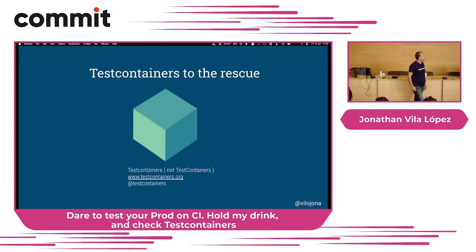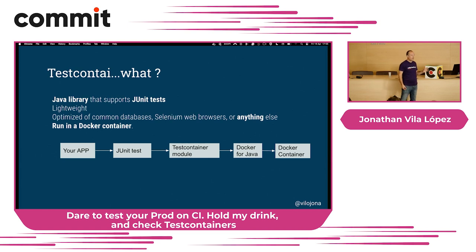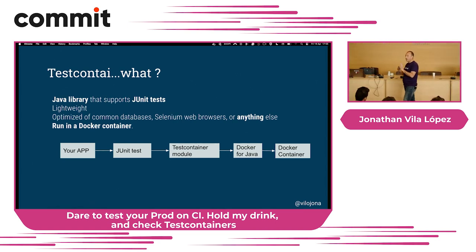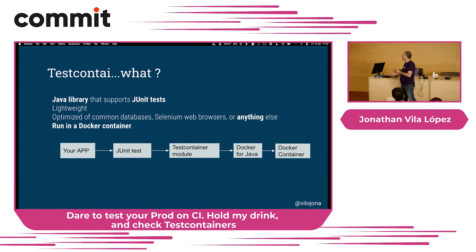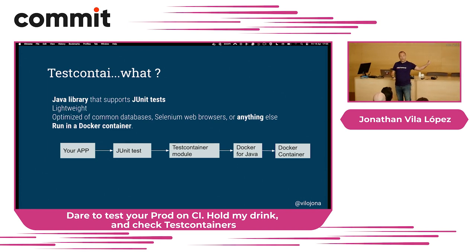Let's see how test containers can help us and what test containers is. Basically, you have your application, your JUnit tests, and then a test container module. The important part is that the test container module uses Docker for Java — in our case it was for Java. Finally, it's using a Docker container. It can also use other configurations, like Podman containers, but in our case it was Docker for Java. In the end, you have your JUnit test and your Docker container.